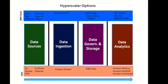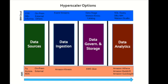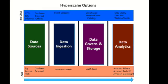The purpose of the ingestion layer of the data lake architecture is to ingest raw data into the data lake. There's no data modification in this layer. The ingestion layer can pull data from different external sources like social media, wearable devices, IoT devices, and data streaming devices.